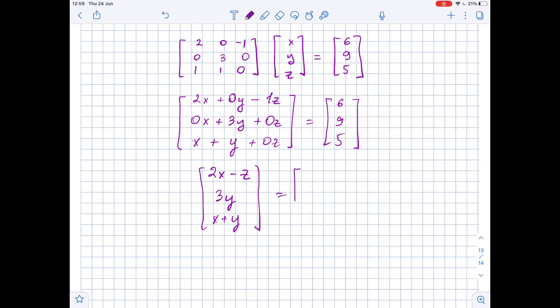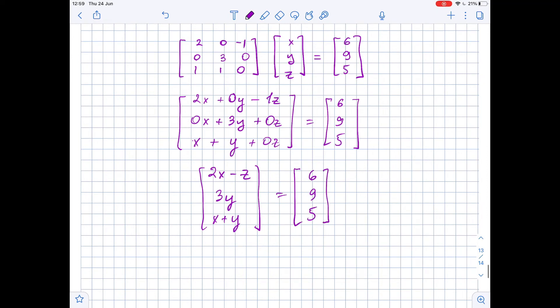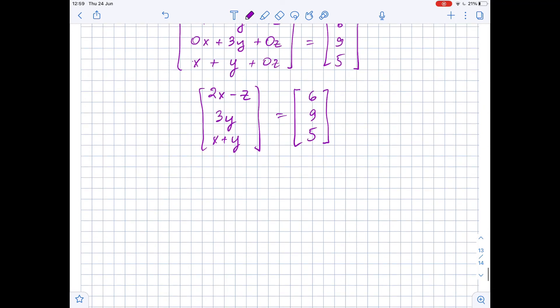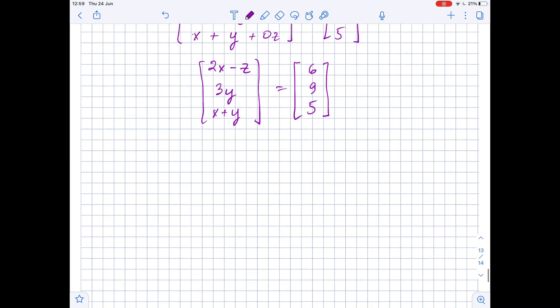And this equals [6, 9, 5]. Well, now since these two matrices are equal, this means that their entries need to be equal. So that means the first entry of the left side matrix, 2x - z,